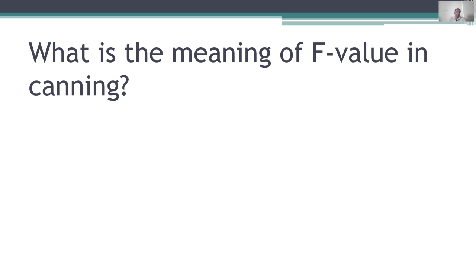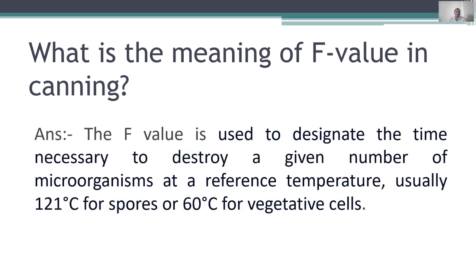Next question: what is the meaning of F value in canning? F value is used to designate the time necessary to destroy a given number of microorganisms at a reference temperature — usually 121°C in the case of spores, or 60°C for vegetative cells.